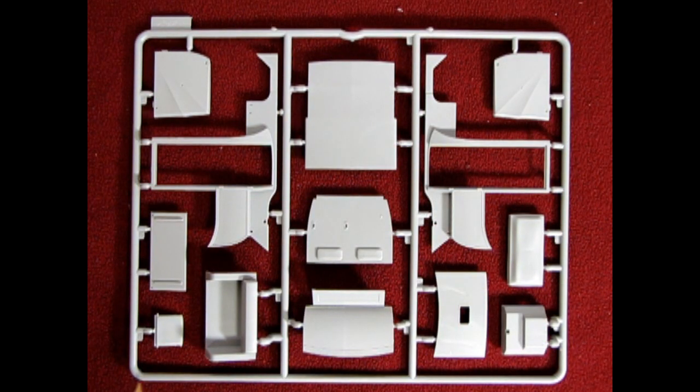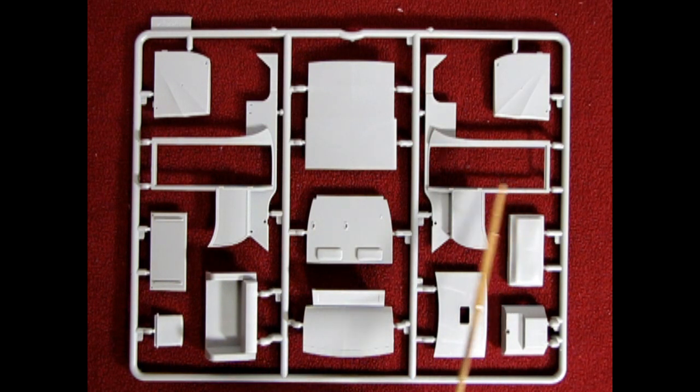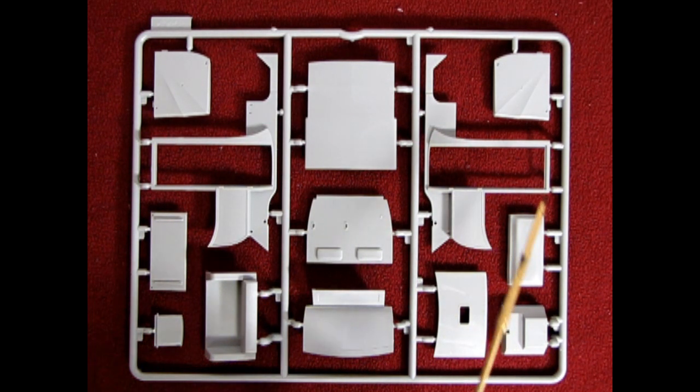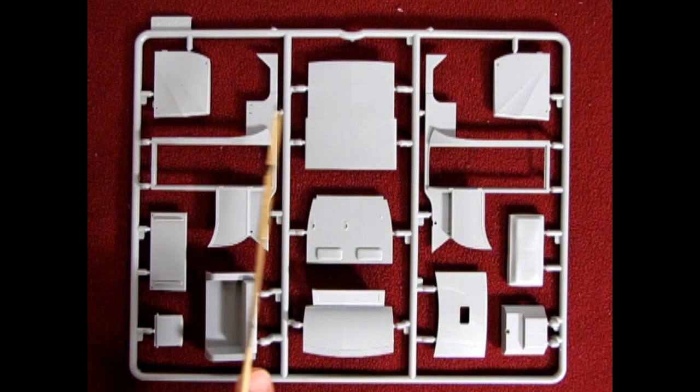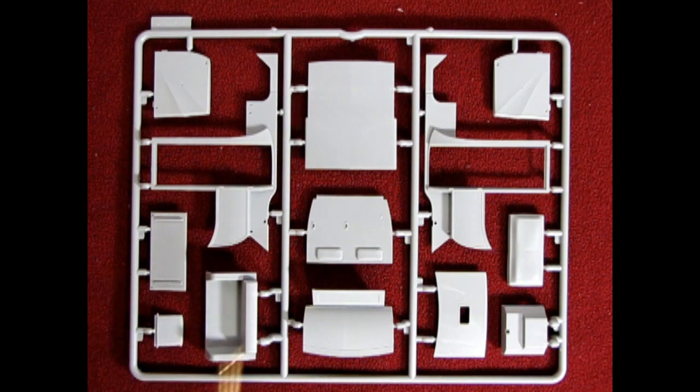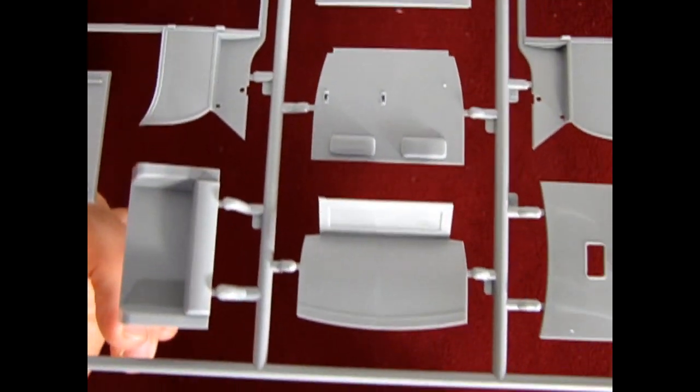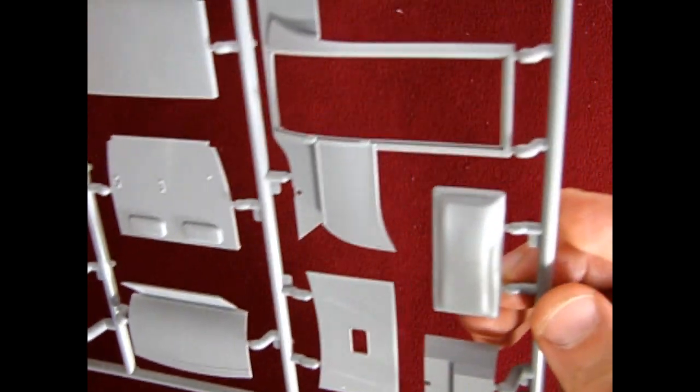Here we have our body and interior components for our coach, as well as some of the engine covers. You can see the nice wrinkle effect on the side panels, as well as on the roof panel. Again, the detail on these parts is quite superb and very clean looking.